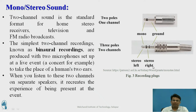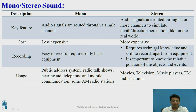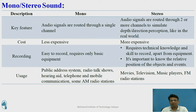There are two types of recording plugs: one used for mono recording and one for stereo recording. For mono recording, a single microphone is used, so it has only one mono input and a ground. For stereo recording, there are two channels — one for the left, one for the right — and one ground. In mono, audio signals are routed through a single channel, while in stereo, they are routed through two or more channels to simulate depth and directional perception as in the real world.